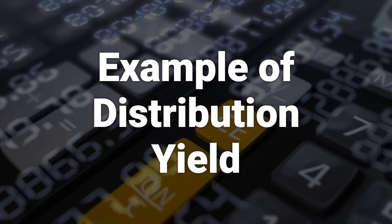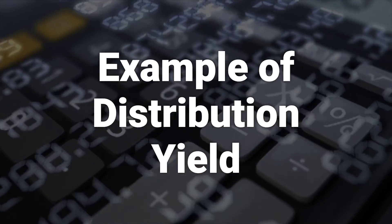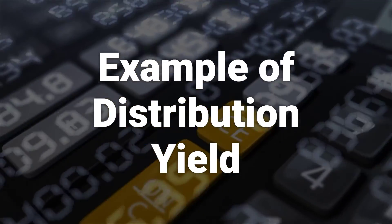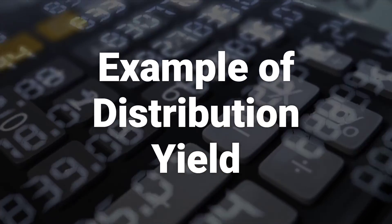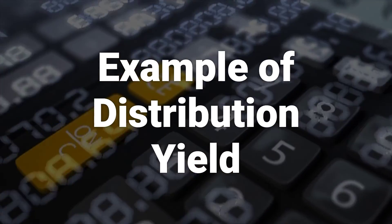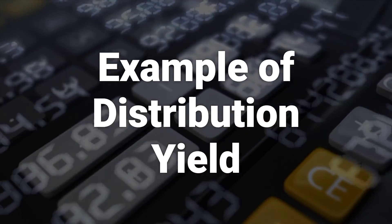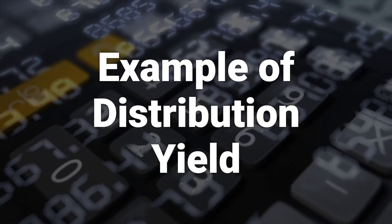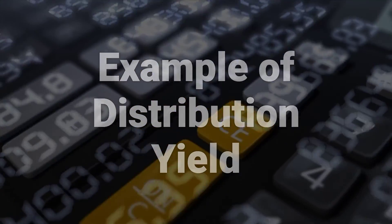Suppose a fund is priced at $20 per share and collects $0.08 in interest payments during a month. The interest is multiplied by 12 for an annualized total of $0.96. Dividing $0.96 by $20 gives a distribution yield of 4.8%.